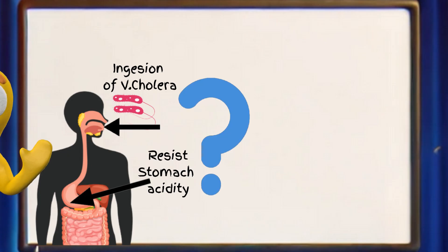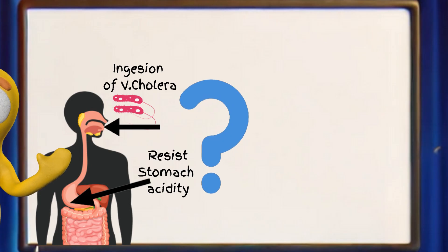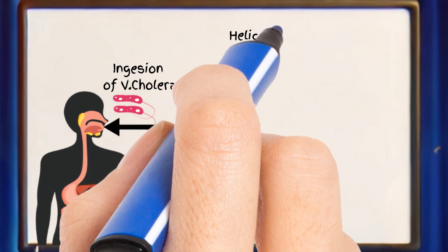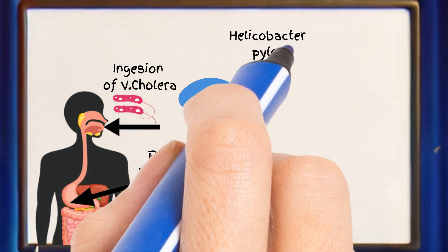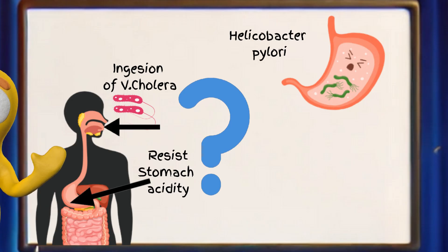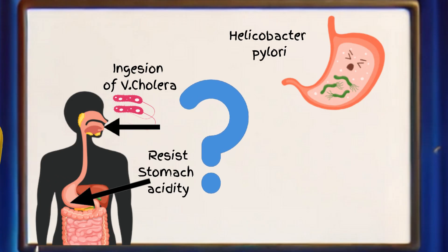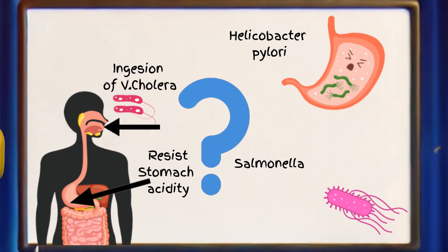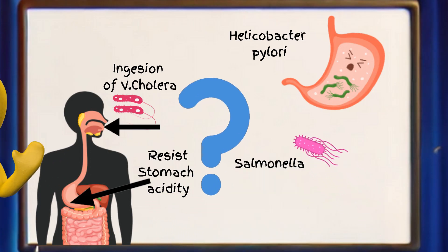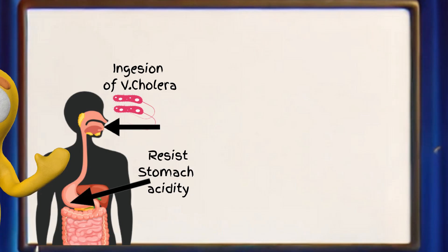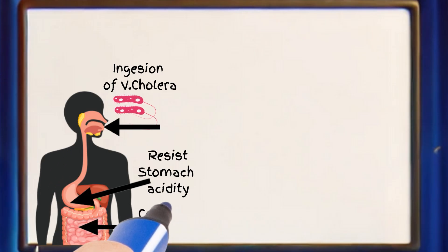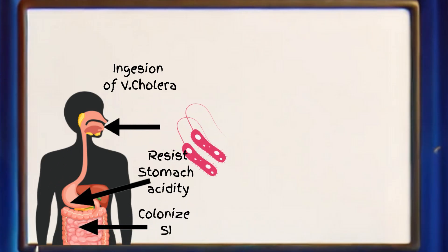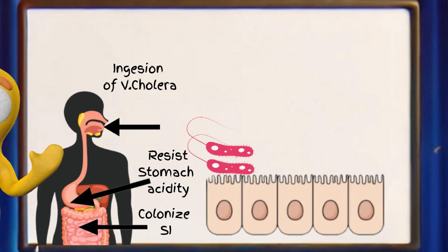Do you know what else can resist stomach acidity? Right — Helicobacter pylori, which causes stomach ulcers. And who else? We've attended their night previously in the Microbial Comedy Club. Right, it's Sally the Salmonella, a common cause of food poisoning. Vibrio cholerae colonizes the small intestine using its tiny hair-like structures, called pili, to stick to the walls.